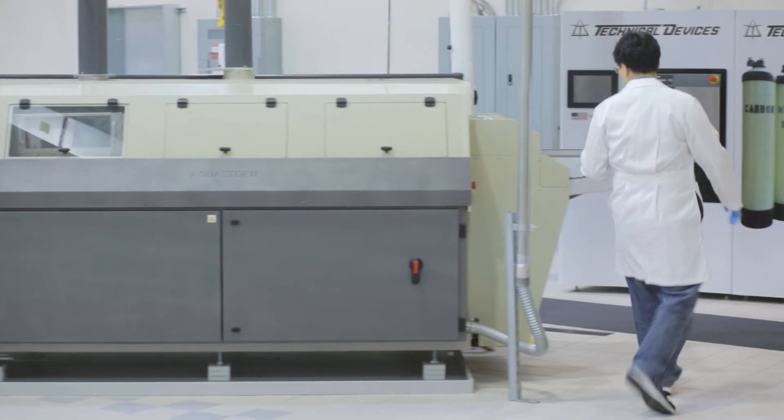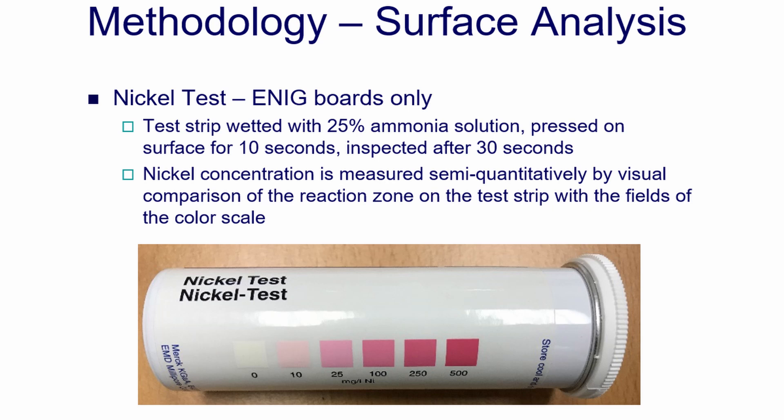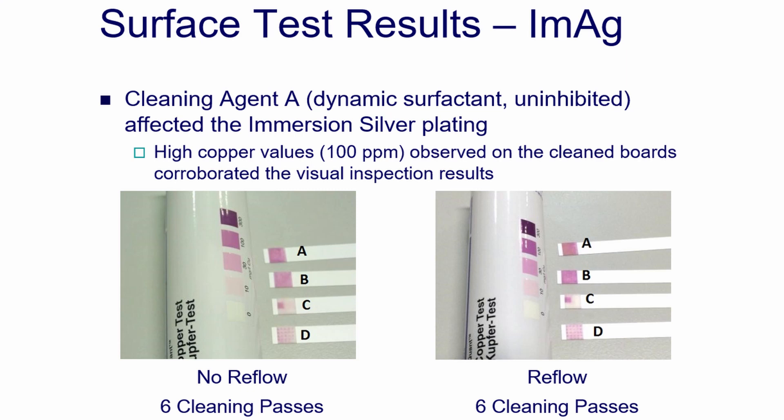The next analytical test conducted was a surface analysis test using a copper test and a nickel test. For Immersion Tin and Immersion Silver, a copper test was conducted on the plating, which would detect any exposed copper after the cleaning process. It was found that for Immersion Tin, there was no exposed copper detected, which means the cleaning process was fully compatible with the Immersion Tin plating. This was true for all four chemistries tested. In the case of Immersion Silver, three of the chemistries were fine with no higher levels of exposed copper detected, whereas one chemistry showed deterioration in the visual inspection and also showed higher amounts of exposed copper, proving that the plating was being affected by the cleaning process.